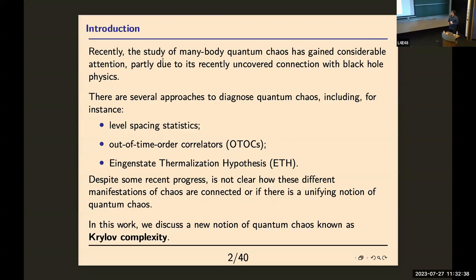There are several approaches to diagnose quantum chaos, as Arpan brainstormed about it, like level space statistics, out-of-time order correlators, and the eigenstate thermalization hypothesis. But despite some recent progress, it's not super clear how these different manifestations of quantum chaos are connected, or if there is a unifying notion of quantum chaos. In this work, I will discuss a new notion of quantum chaos known as Krylov complexity, which apparently has potential to connect these different manifestations of chaotic behavior.